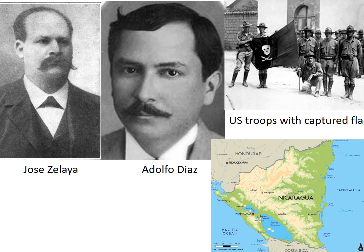There was one notable exception in the Caribbean in which Taft did send in actual troops, and that was Nicaragua. When the Nicaraguan dictator Jose Zelaya threatened to move against American mining interests in his country, the Taft administration helped stage his overthrow. In 1911, it established a pro-American president, Adolfo Diaz, and America then began to establish American control of Nicaragua's banking and customs.